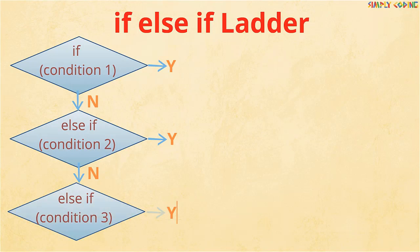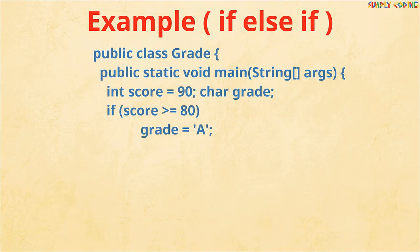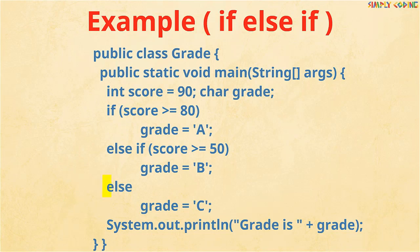Java allows you to construct an if-else-if ladder. The if statements are executed from top to bottom. In an example assigning grades based upon marks, if a condition is true all other if statements are bypassed, and if none of those if statements is true, the last else is executed. A key thing to remember is to understand which else belongs to which if — use proper indentation and curly braces to bring clarity.